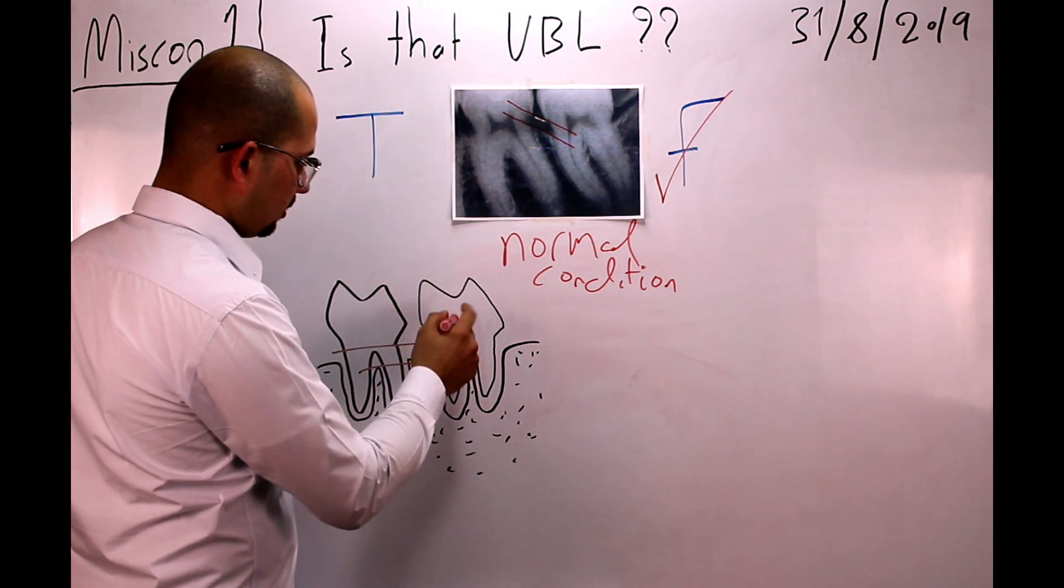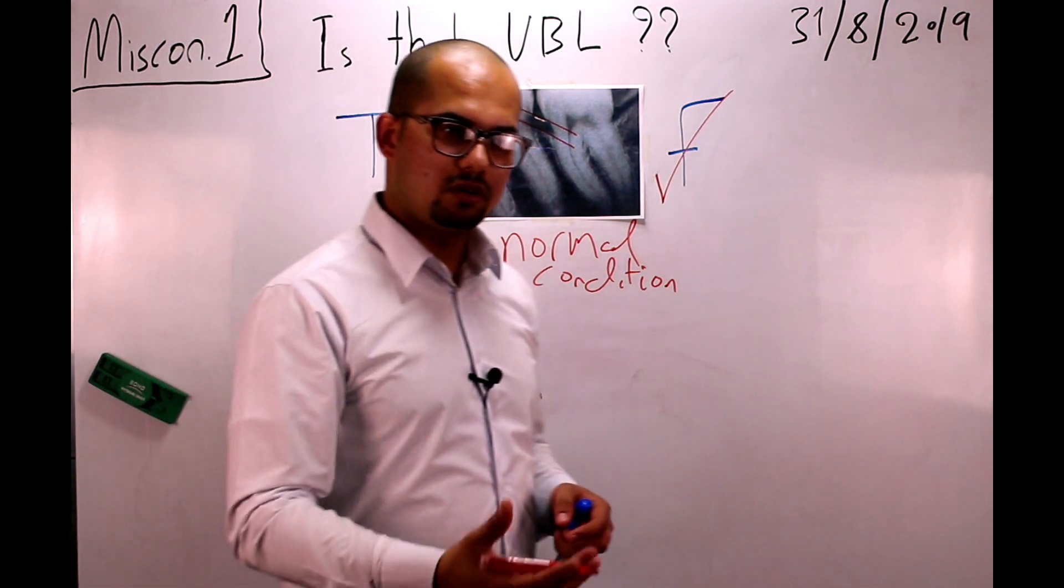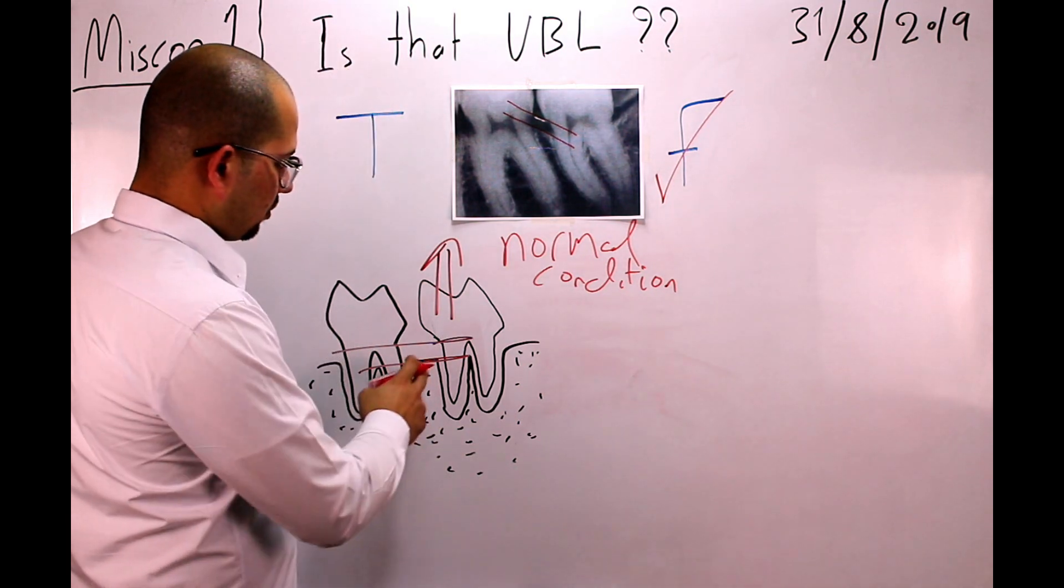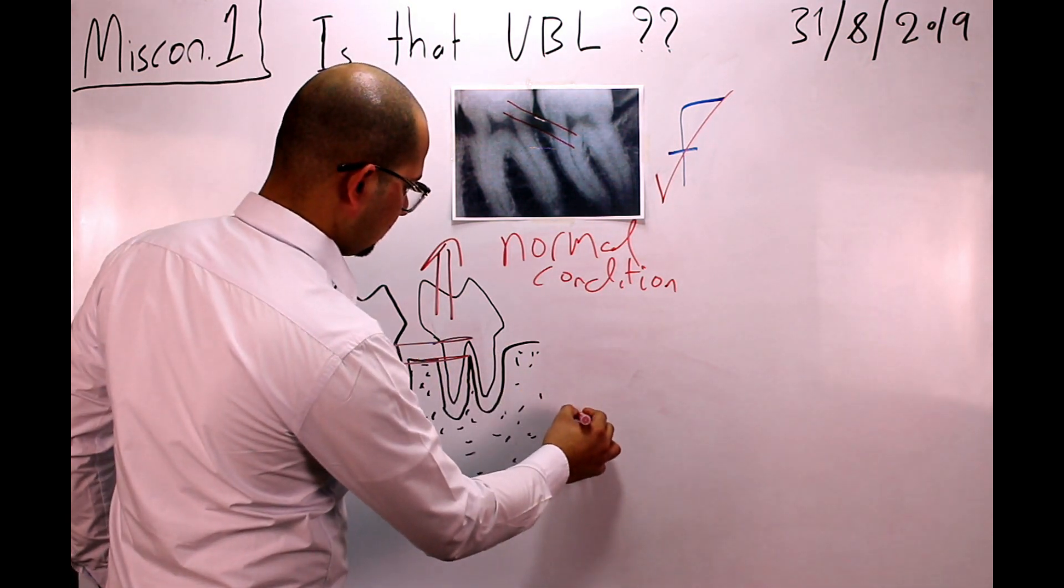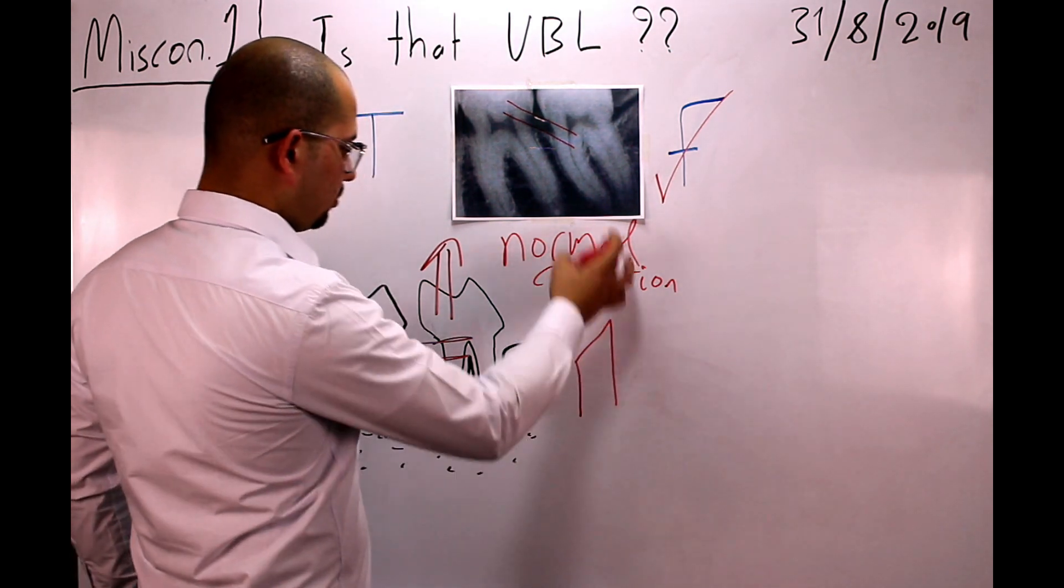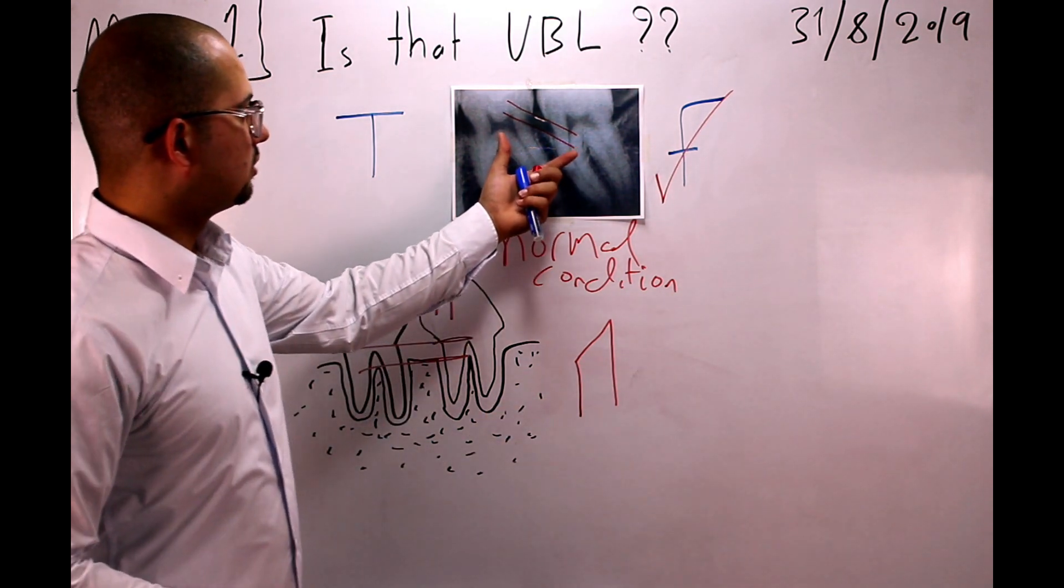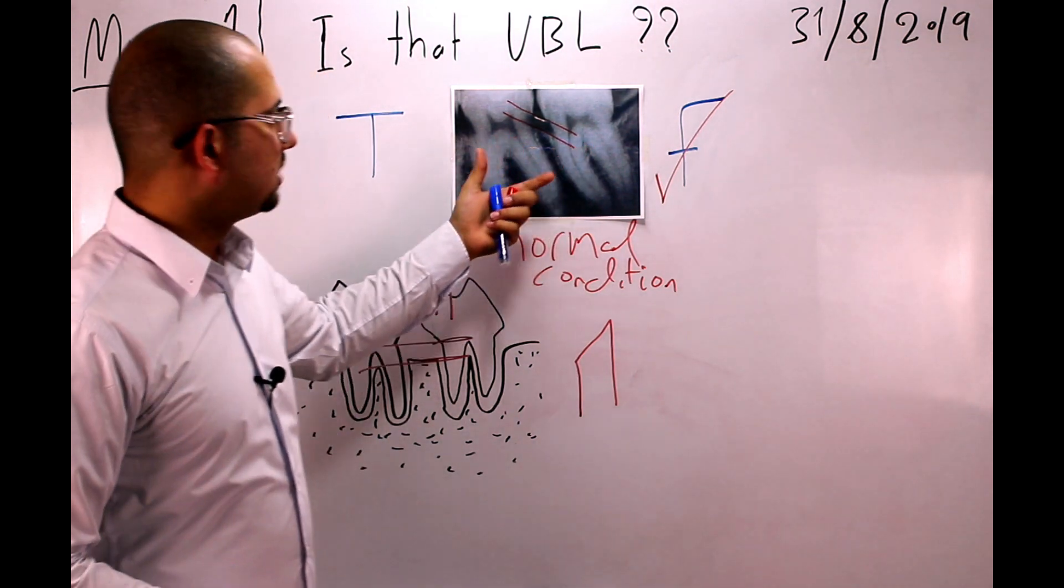this tooth over-erupts, it will bring the alveolar bone occlusally, so that the alveolar bone in this case is more occlusally, so that it looks like a vertical bone loss, but it's not.